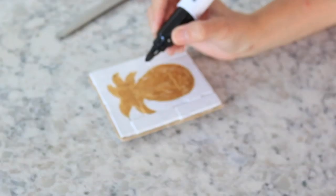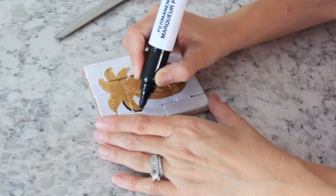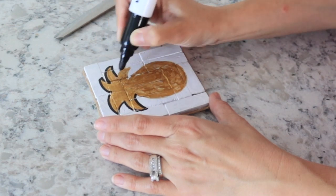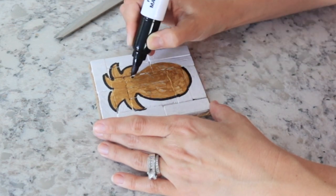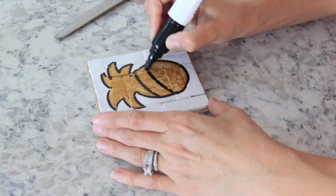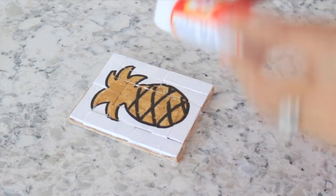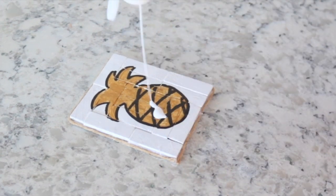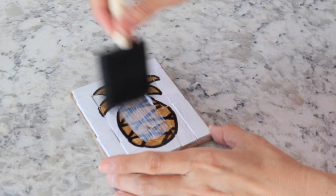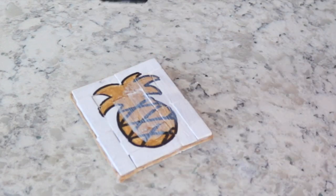Now you can totally leave it like this if you would like but I decided to take a black marker and just outline the pineapple and then that way I could put the little lines across the bottom as well so it would look more like a pineapple. But it's totally up to you, you could leave it blank or you could outline it. And now I'm just going to take some of my Mod Podge, this is not the matte, this is just the regular, and I'm just going to put some of this on there to kind of protect it because I do plan on putting drinks on it.